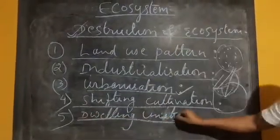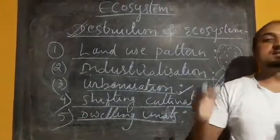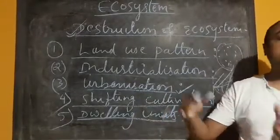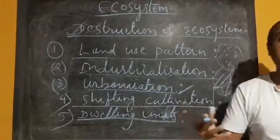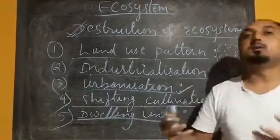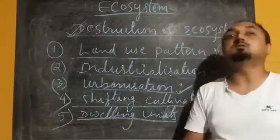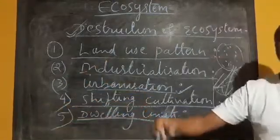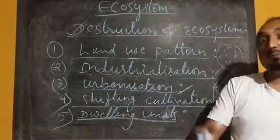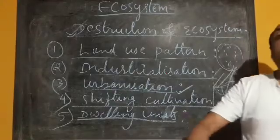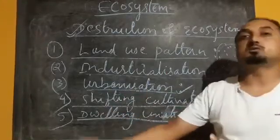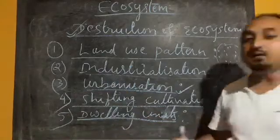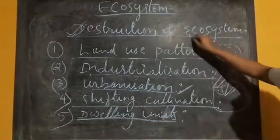Next, we have dwelling units. To accommodate the migrating population in cities, more and more dwelling units are being constructed to meet the increasing demand for transport facilities. This involves the conversion of crop lands and forest land into urban settlements. There is a continuous conversion of cropland and forest area into construction of transport facilities, housing, railways, and roads. Due to that, our ecosystem is getting disturbed.